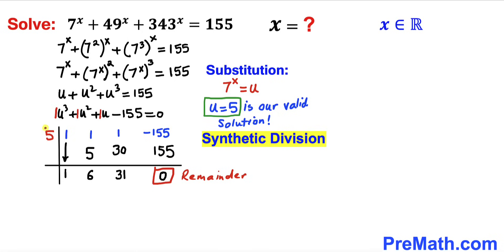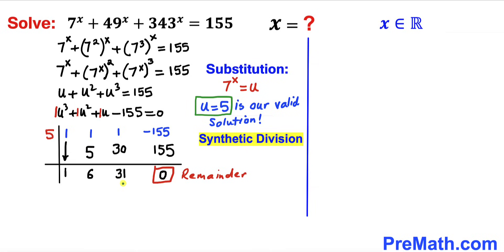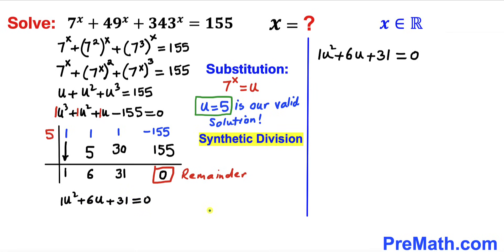A zero remainder confirms that 5 is indeed one of our solutions. Now let's focus on the numbers 1, 6, and 31. The constant is 31, the coefficient of u is 6, and the coefficient of u squared is 1. So this whole thing can be written as u squared plus 6u plus 31, and I'm going to set it equal to 0 to solve this quadratic equation.